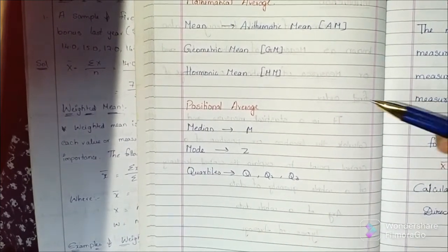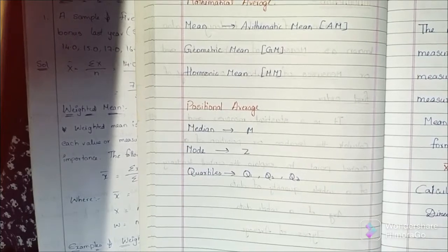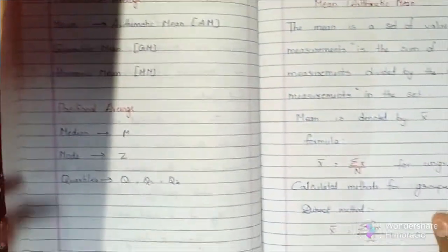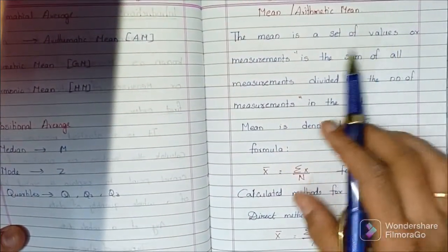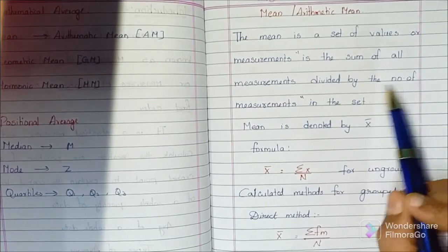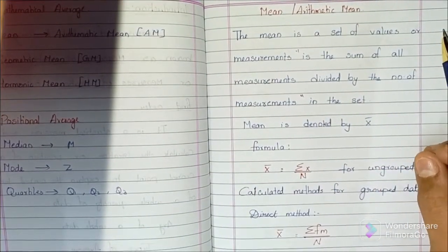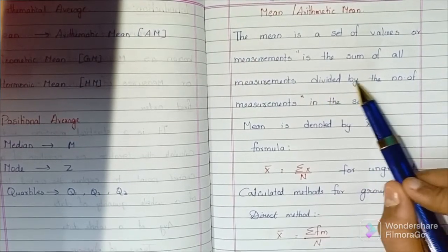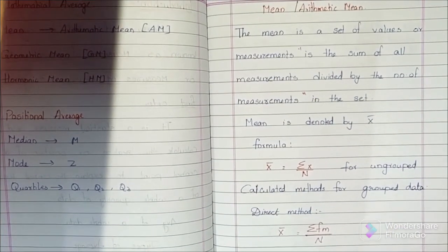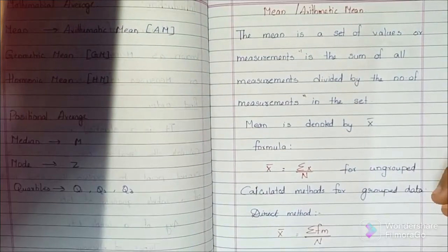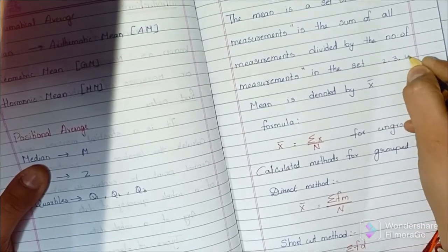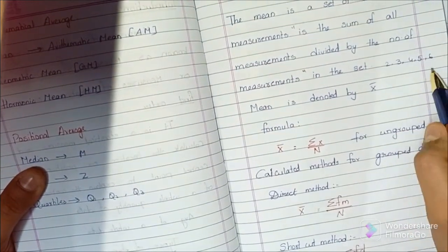We also calculate quartiles Q1, Q2, and Q3. Arithmetic Mean is the sum of all measurements divided by the number of measurements in a set. For example, if we have values 2, 3, 4, 5, 6, we apply this formula.